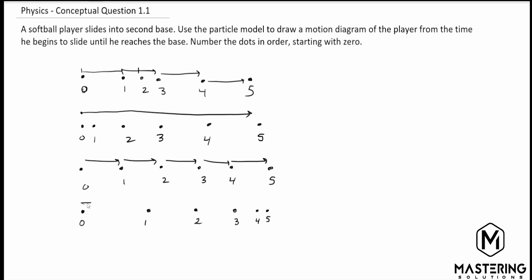And then the last one down here, they're starting out pretty quickly because they covered a relatively large distance between zero and one. Then between one and two it's a little bit closer, so they're slowing down, and then three and four and five. So this is the correct answer, where they're starting out quickly and then sliding and slowing down, and at number five they are stopping. And this is the correct answer.